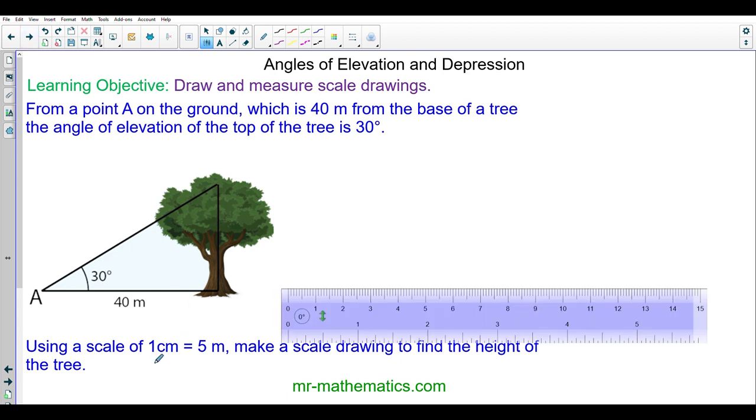We have our scale of 1 centimeter to 5 meters. So 1 centimeter equals 5 meters. We've been given a base of 40 meters, so we're going to multiply by 8. The base of our scale drawing will be 8 centimeters because I've multiplied both sides by 8.